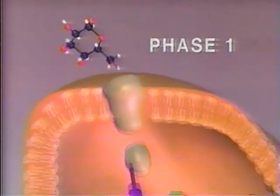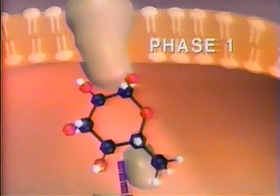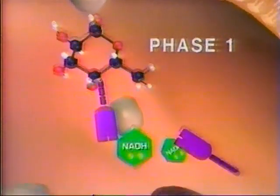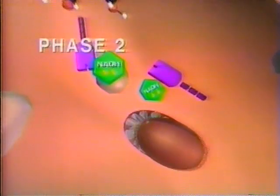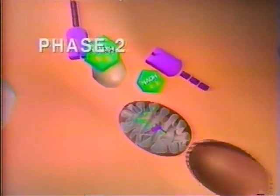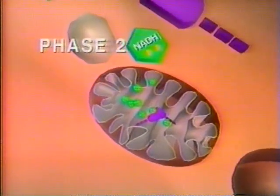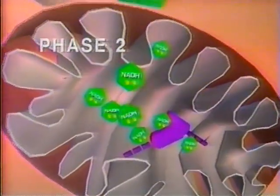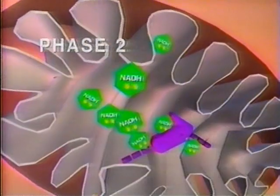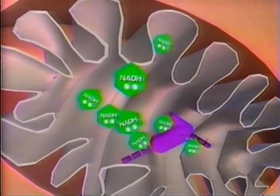For all the effort, phase one of cellular respiration, namely glycolysis, generates just two molecules of ATP. And in phase two, the Krebs cycle, only two additional ATP molecules. Remember, though, much of the energy from glucose has been transferred to the carrier molecules, NADH and FADH2.